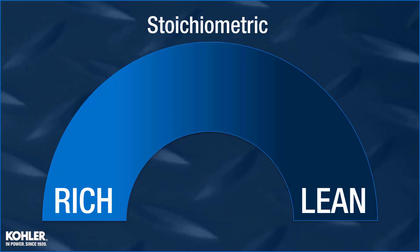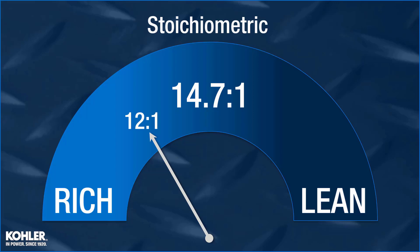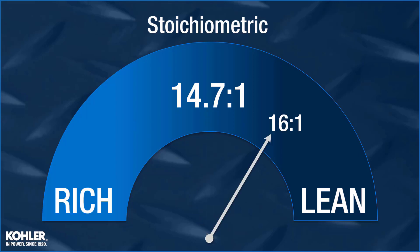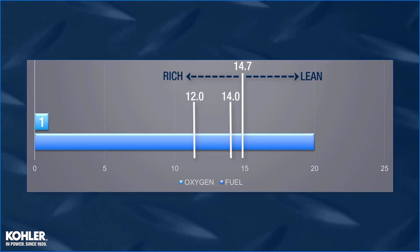We can't have a conversation about carburetors without talking about rich, lean, and stoichiometric. If you've heard of the stoichiometric air-fuel ratio, you've probably been taught that 14.7 parts of oxygen to one part fuel is, in theory, the ideal ratio for a gasoline engine. Anything below 14.7 to 1 is defined as rich, and anything above is defined as lean. Between 14 to 1 and 12 to 1 are more realistic operating air-fuel ratios, both being on the rich side of the scale.